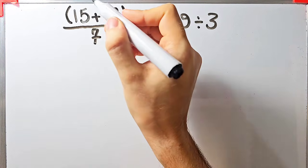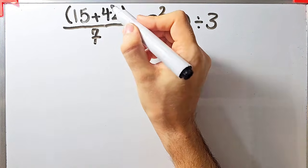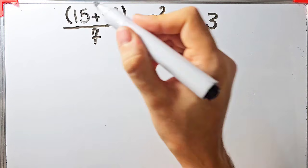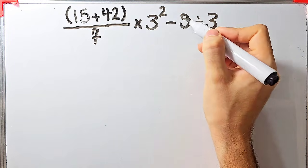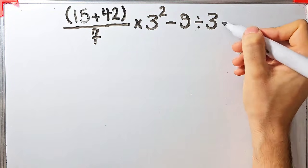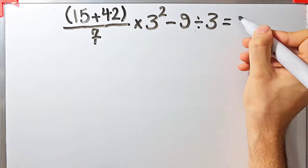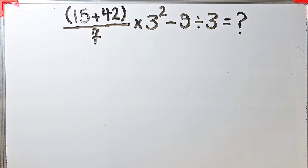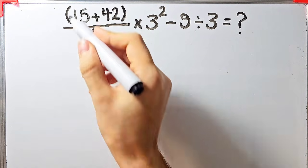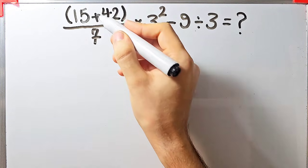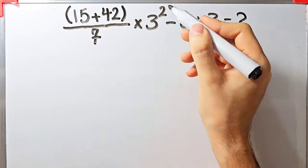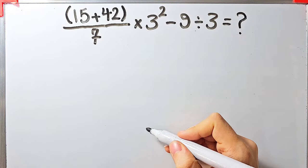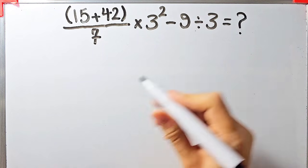In this question we have: open parentheses 15 plus 42 close parentheses, over 7, times 3 to the power of 2, minus 9 divided by 3. What is the answer of this question? In this question we have parentheses, addition, multiplication, exponents, subtraction, and division.